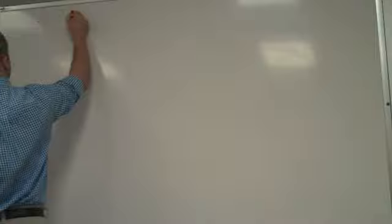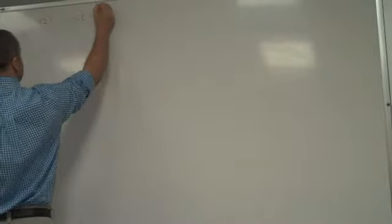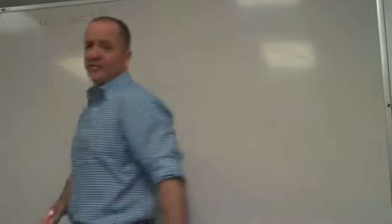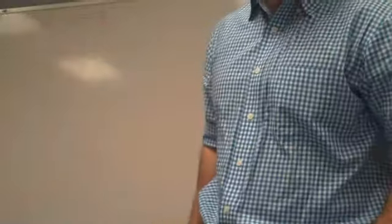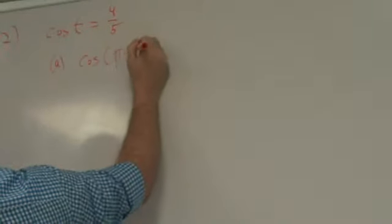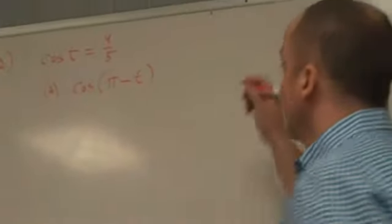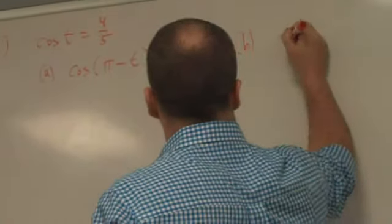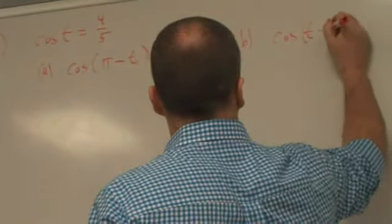So number 42 says cosine of t equals four-fifths. And what they wanted you to find was cosine of pi minus t. Am I reading this correctly? And cosine of t plus pi.